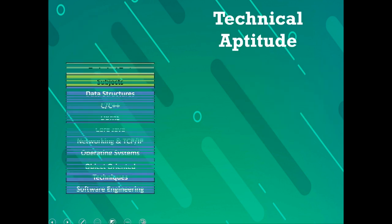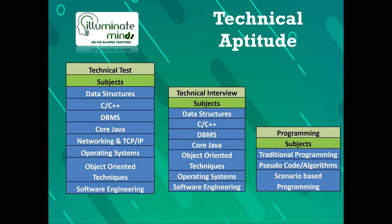The technical test — relevant not just to TCS but also to Wipro and Cognizant — will have questions from: data structures, C, C++, DBMS, core Java, networking, OS, and software engineering. The technical interview covers similar subjects, plus programming in C, C++, Python, or any language where they can ask you to write code. So again: if you are good at verbal, Infosys is a better choice. If you are technically strong and good at quant, TCS is the better choice.